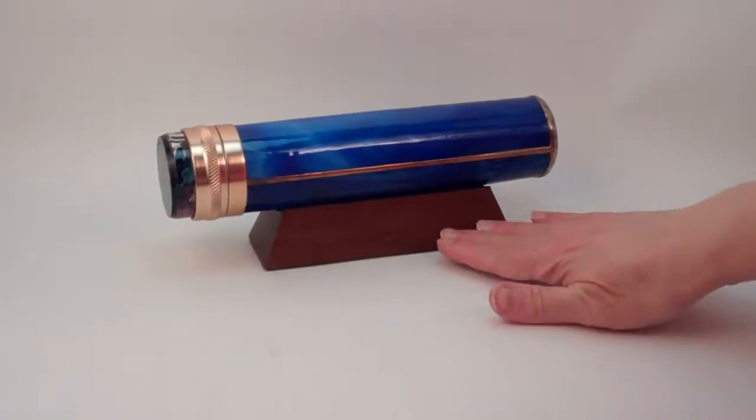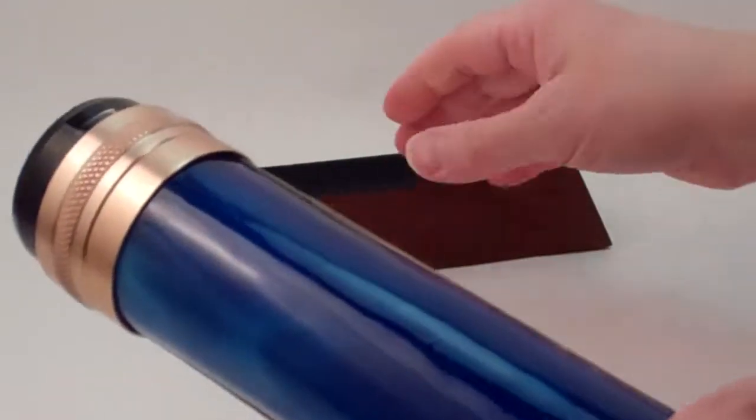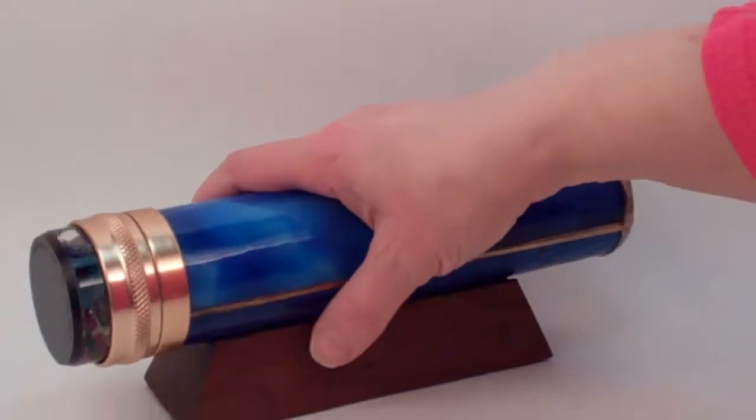We can add an engraved plate for you if this is for a special occasion or for an executive gift and the base is solid walnut with cork feet and a black suede lining for the kaleidoscope to rest upon.